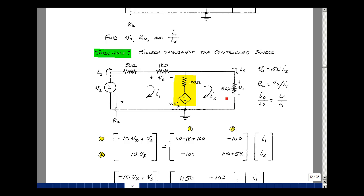Let's go around mesh two. I see a 5K and a 100 ohm resistor. That's going to go in row two, column two. And then what's common between meshes two and one, I'm going to sum those resistances and negate them. It's going to be symmetric here. What's between meshes one and two is also between meshes two and one. Go around the mesh counterclockwise, I see a drop in voltage of 10 V sub X.